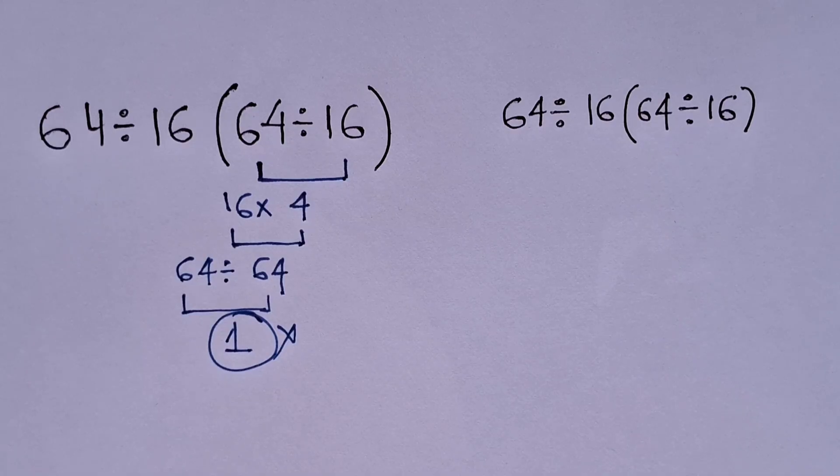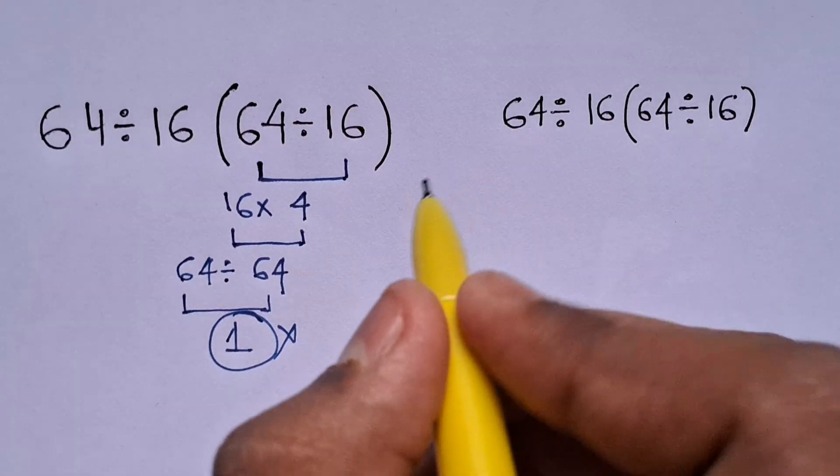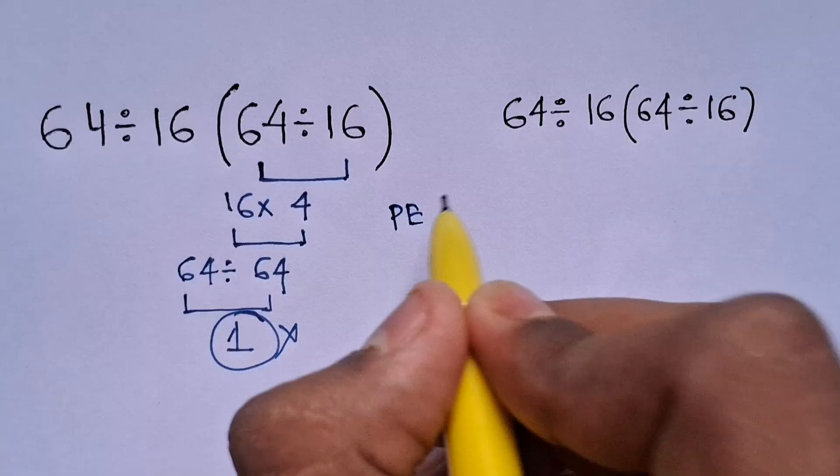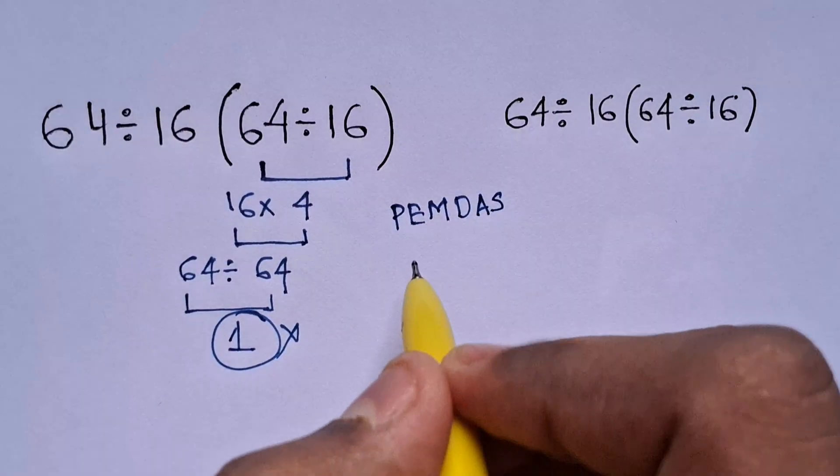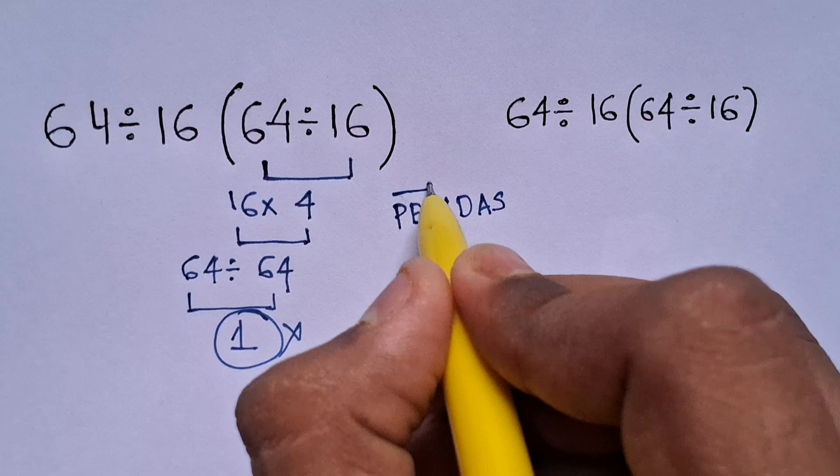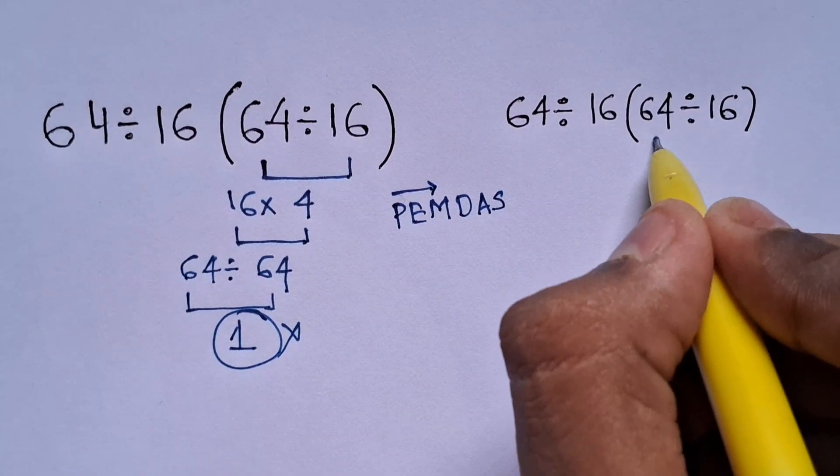The answer 1 is not correct because according to the order of operation, which is called PEMDAS or somewhere it's called BODMAS, where division and multiplication, and addition and subtraction have equal priority, but we have to solve them from left to right.